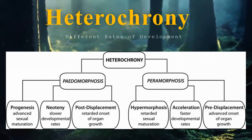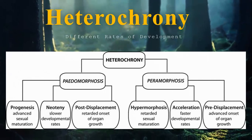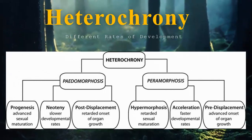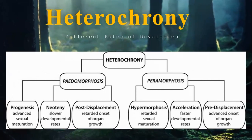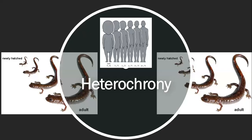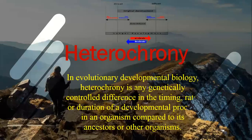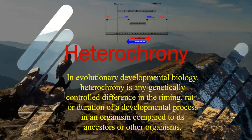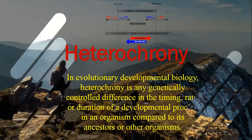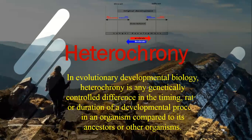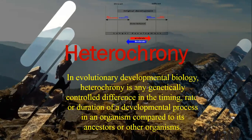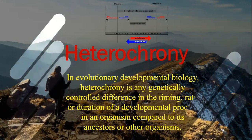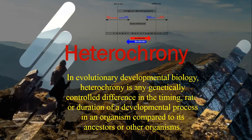We are primarily discussing two types of heterochronic events: pedomorphosis and peramorphosis. Heterochrony is basically an evolutionary developmental biology concept — a genetically controlled difference in the timing, rate, or duration of developmental processes in an organism as compared to their ancestors or other organisms.